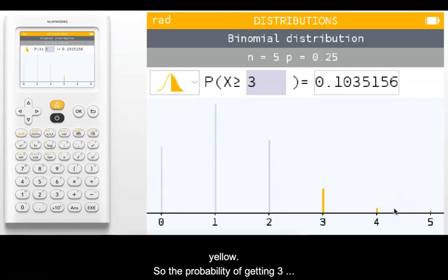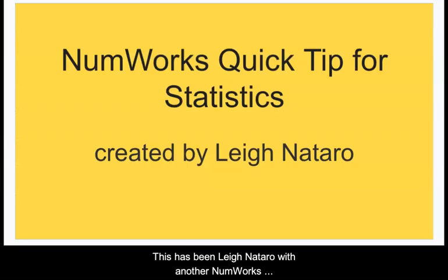So the probability of getting three or more blues would be about 10%. This has been Lee Notaro with another NumWorks quick tip for statistics.